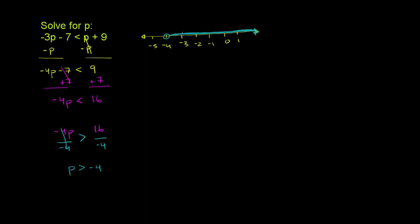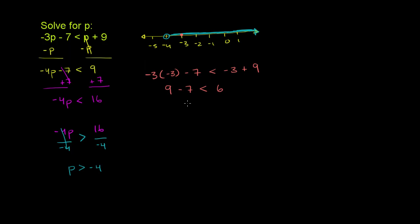Let's try out p equals negative 3. This should work since it's in our solution set — negative 3 is greater than negative 4. We have negative 3 times negative 3 minus 7 should be less than negative 3 plus 9. Negative 3 times negative 3 is 9, minus 7 should be less than 6. 9 minus 7 is 2, and 2 is less than 6 — of course, it is.